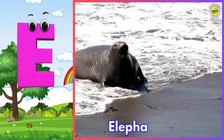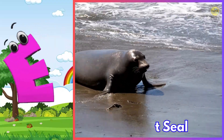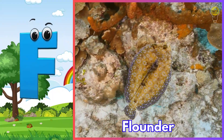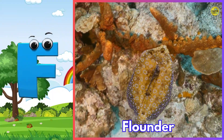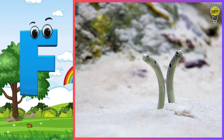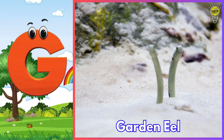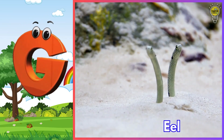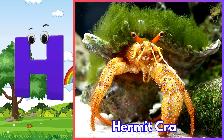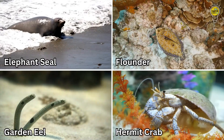E is for elephant seal. F is for flounder. G is for garden eel. H is for hermit crab.